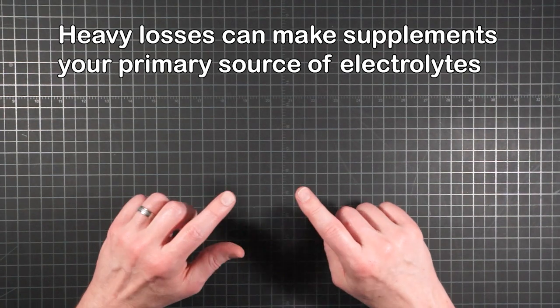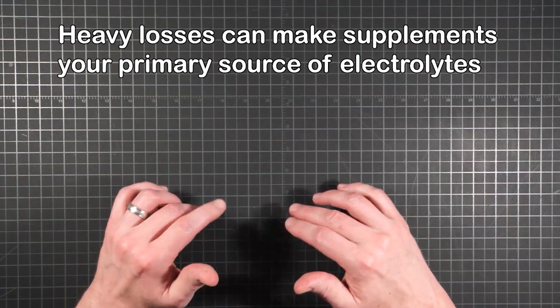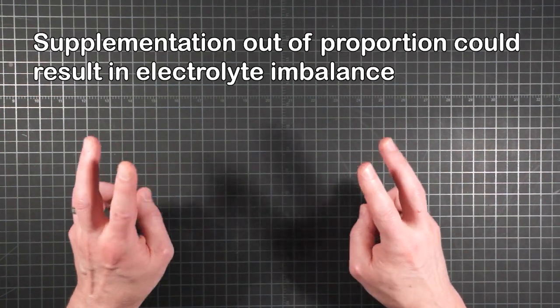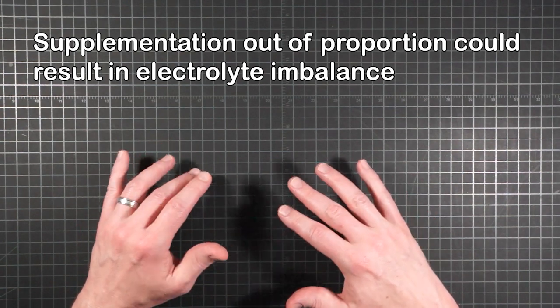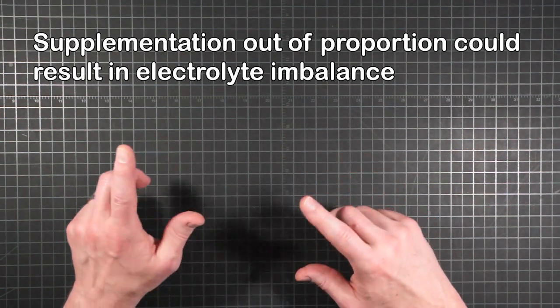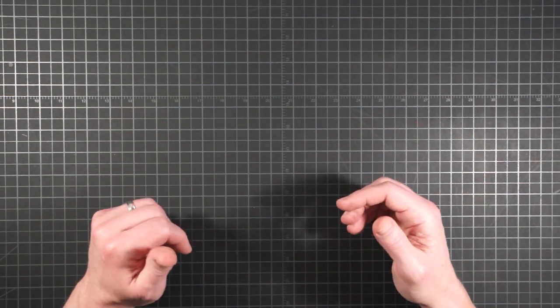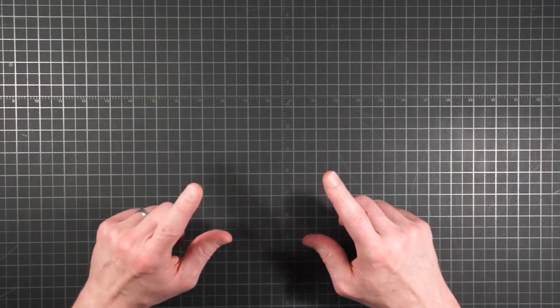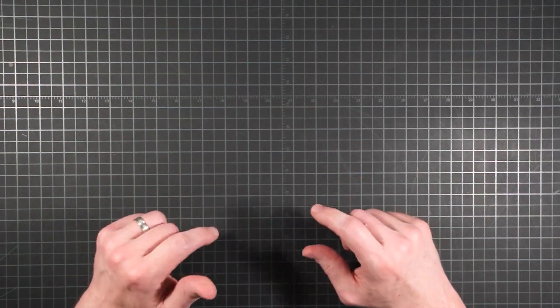But in a situation where you're losing far more salt than your diet is replacing, supplements become the primary source of your sodium. And if those supplements are unnaturally low in chloride, it lays the groundwork for at least the potential of a hypochloremic situation. It's the same sort of ratio problem we saw with sodium and potassium. If the proportions are far enough out of whack, then the more you rely on such an imbalanced supplement, the more out of whack your electrolytes are prone to become.